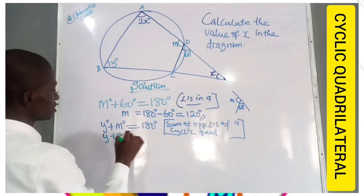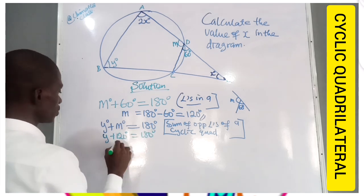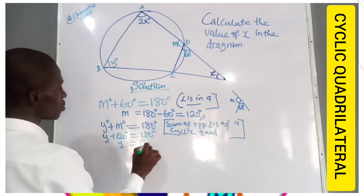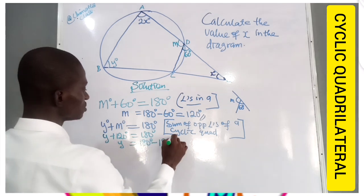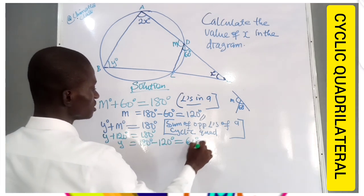Y plus 120 degrees is equal to 180 degrees. So Y is equal to 180 degrees minus 120 degrees, which is 60 degrees. Yes.